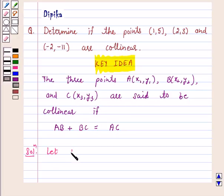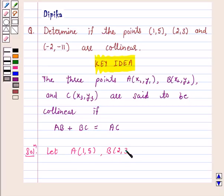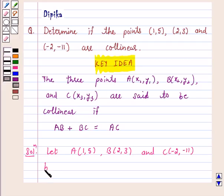Let A = (1, 5), B = (2, 3), and C = (−2, −11) be the given points.